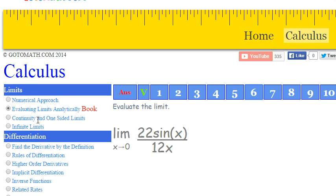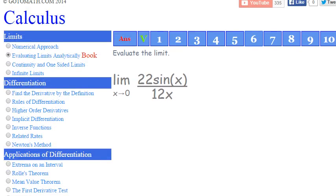Alright, we are working some calculus problems and we're focusing in here on evaluating limits analytically. So let's take a look at this particular problem here. We've got the limit as x approaches 0 of 22 times sine x over 12x.